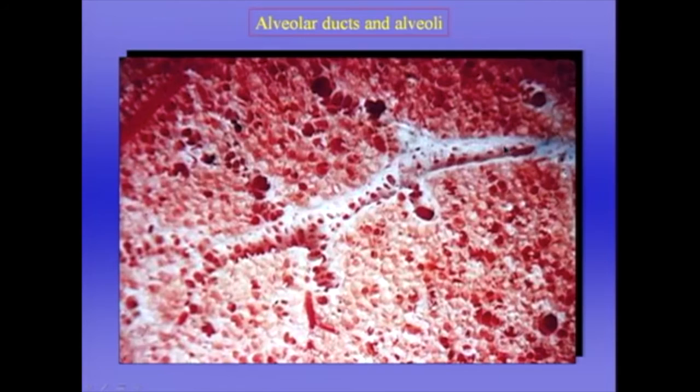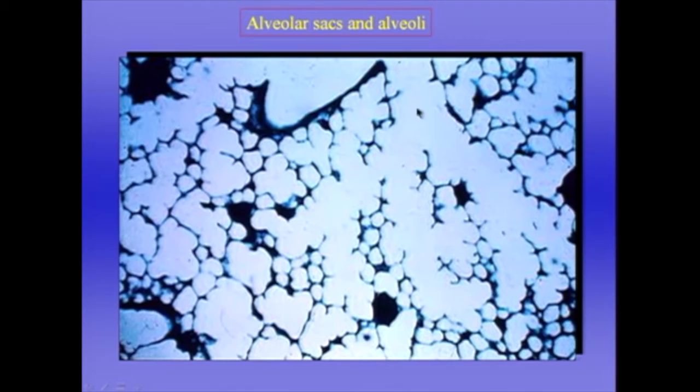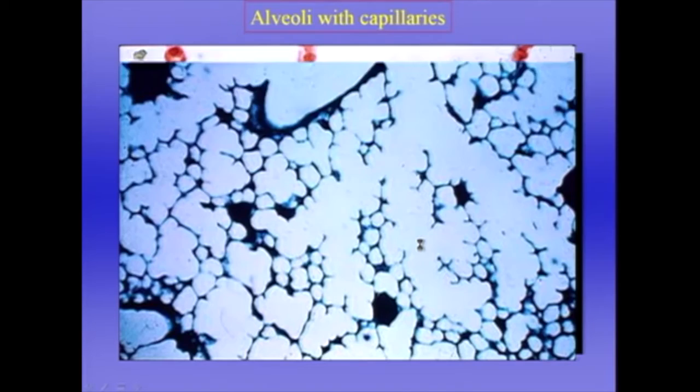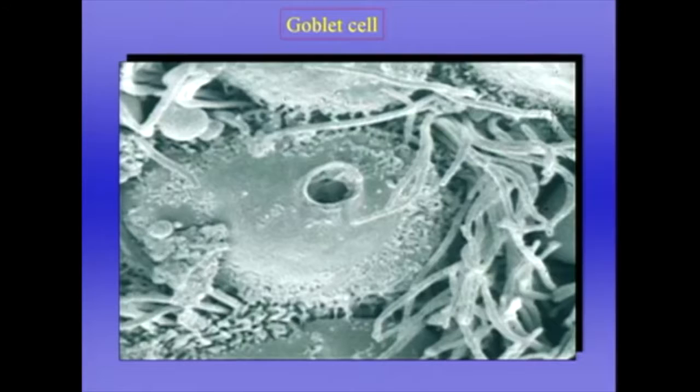Now we're even further down the lung. Here's an airway coming down, and now we get these blindly ending alveolar sacs. In the ends of the sacs are the alveoli, and finally we see the alveoli and the blood gas barrier. Now let's take an imaginary walk down the airways and see what we can find. Here's a so-called goblet cell in the airway wall — you can see an opening through which mucus is discharged onto the airway wall.